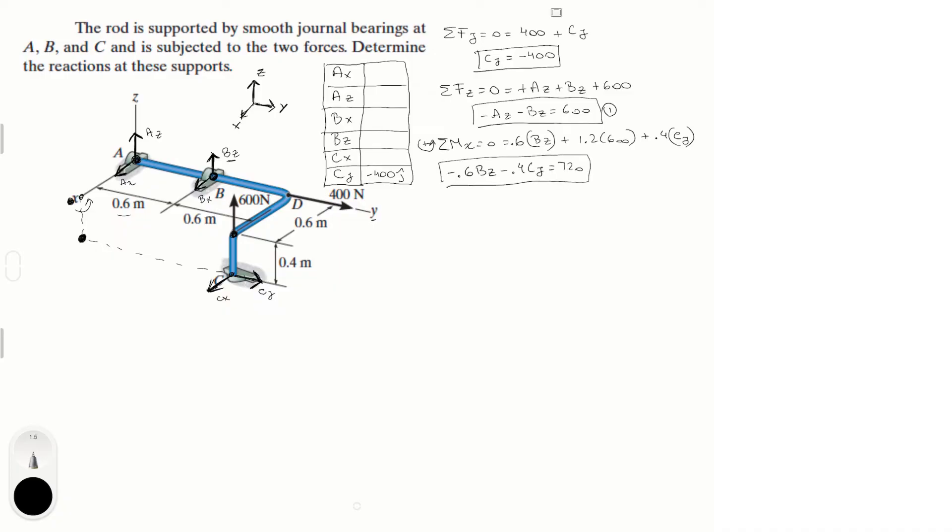We already found CY. We can plug it in and solve for BZ. BZ equals 720 plus 0.4 times CY over negative 0.6. Plugging in negative 400 for CY, you get that BZ is equal to minus 933.33 in the k direction.